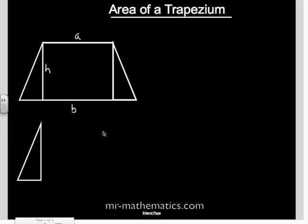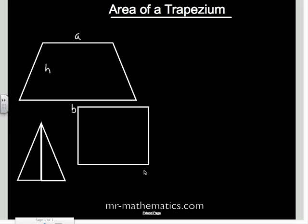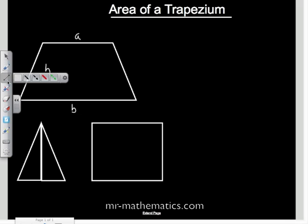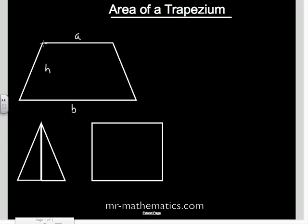Now from our trapezium we are going to make an isosceles triangle and a rectangle and I am just going to draw back in the height of the trapezium.